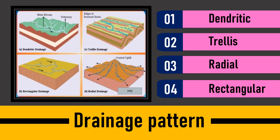The rectangular pattern is developed on a strongly jointed terrain and the drainage follows the joint patterns. Rectangular and trellis look more or less the same, but in trellis a number of small tributaries join the main river, whereas in the rectangular pattern only a few small tributaries join the river. That was the drainage pattern.